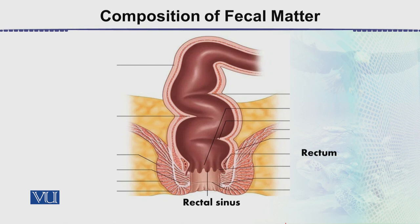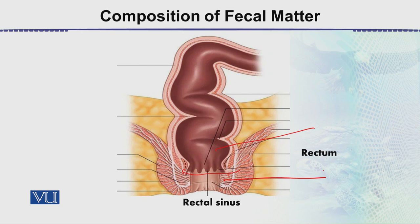In this diagram, we are showing the last part of the intestine which is the rectum, where the fecal matter is stored. These are the muscles that we can control, and then through reflexes these muscles relax and the fecal matter comes out of the body. The sphincter muscles, when they relax, allow the fecal matter to pass through the anus or anal aperture. This is all about the composition of fecal matter.